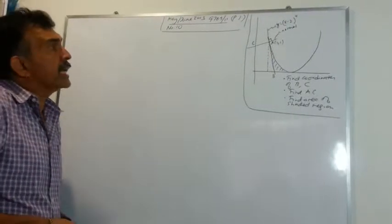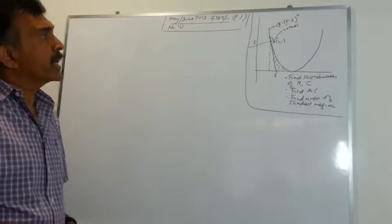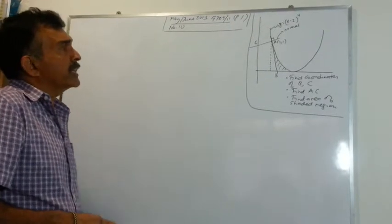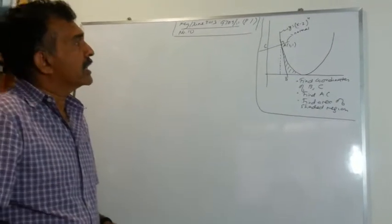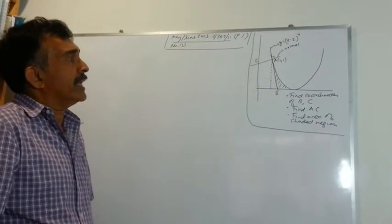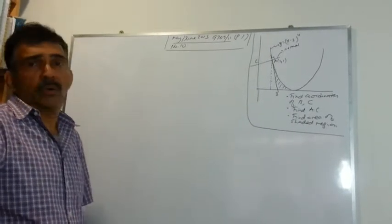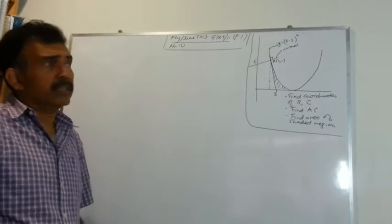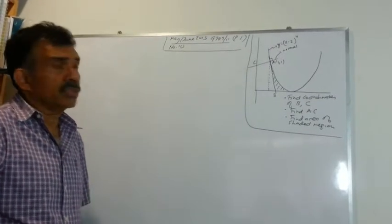We are given a curve with the equation y equals x minus 2 raised to the power of 4. We are told that the tangent at point A cuts the x-axis at B, and the normal at A cuts the y-axis at C. We are asked to find the coordinates of B and C, then find the length of AC, and finally find the area of the shaded region.